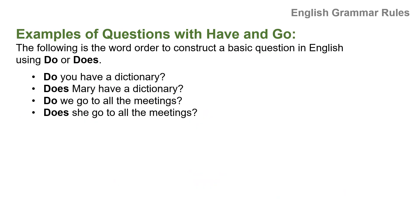Now here are some examples of questions with have and go. Second person singular: Do you have a dictionary? For 'Mary', she is third person singular, so: Does Mary have a dictionary? First person plural: Do we go to all the meetings? And she is third person singular: Does she go to all the meetings?